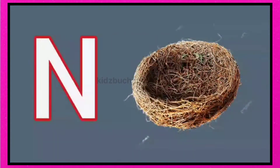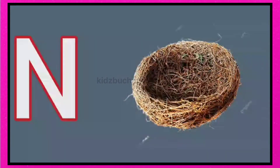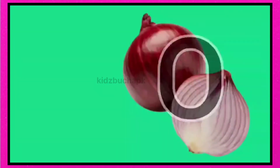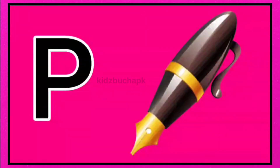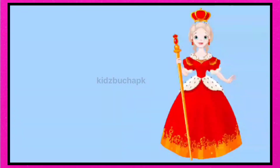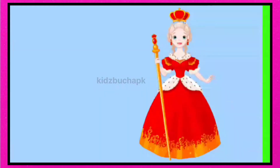N for nest, nest means ghosla. O for onion, onion means piahs. P for pen, pen means pen. Q for queen, queen means mulgah.